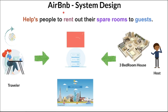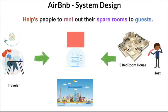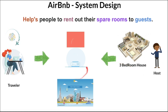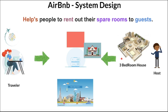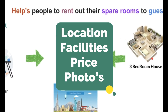What exactly does Airbnb mean? Airbnb is a software application that helps people to rent out spare rooms to travelers. For example, there is a landlord who has a three-bedroom apartment and he would like to rent out the spare rooms to travelers. So the landlord connects to the Airbnb application, creates a profile, and once the profile is created he creates the rental object into the system by giving details like location, the facilities available, the price, and the photos.